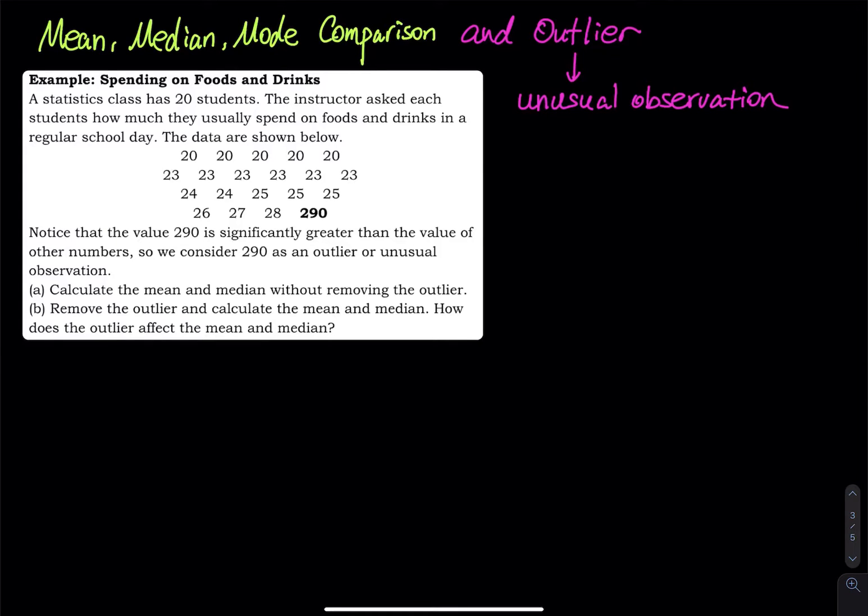Outlier is an unusual observation. So let's say 100 people took a test, everybody got an A, but you got a zero. So your score is an outlier because your score looks weird and unusual compared to everybody else.